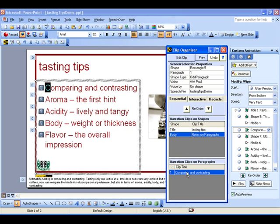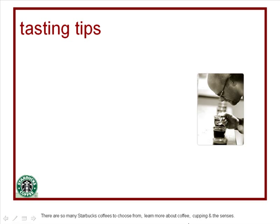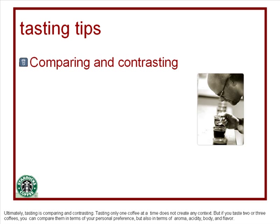Now I'll show you how these clips play in sequence in the presentation slide show. Play the slide show for the slide by hitting the slide show button on the toolbar. Notice how the clips are coordinated with the animations of the text. There are so many Starbucks coffees to choose from. Learn more about coffee, cupping and the senses. Ultimately, tasting is comparing and contrasting. Tasting only one coffee at a time does not create any context. But if you taste two or three coffees, you can compare them in terms of your personal preference, but also in terms of aroma, acidity, body, and flavor.